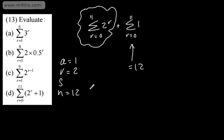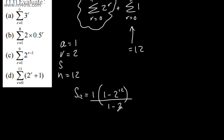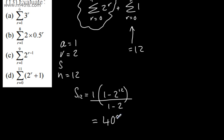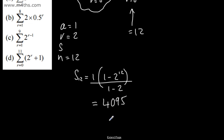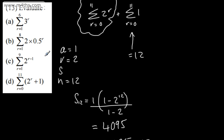Plugging the geometric part into the formula: 1 times (1 minus 2 to the power of 12) over (1 minus 2), which is (1 minus 2¹²) over negative 1. Since 2¹² is 4096, we get 4095. Adding the constant sum of 12 gives 4095 plus 12, which equals 4,107.